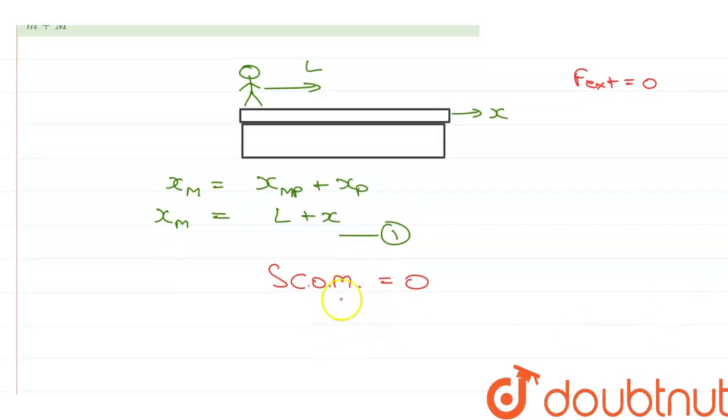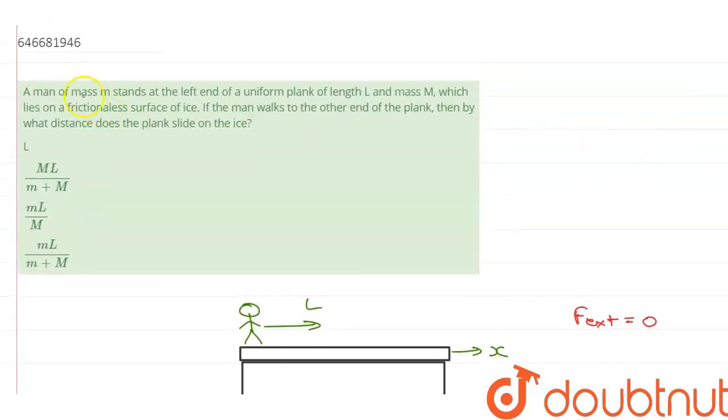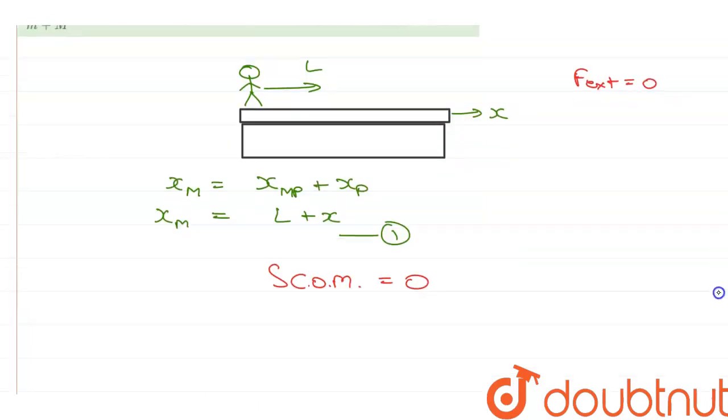So now, the center of mass equation will be m, the mass of the man, times the displacement of the man